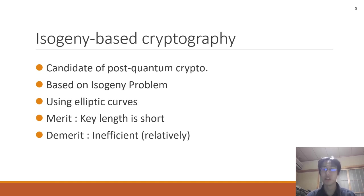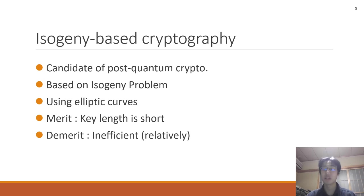Here are the main properties of isogeny-based cryptography. Isogeny-based cryptography is considered as one candidate of post-quantum cryptography, and it is based on the isogeny problem. In other words, the assumption that the isogeny problem cannot be solved even using a quantum computer is the basis for the security of isogeny-based cryptography.